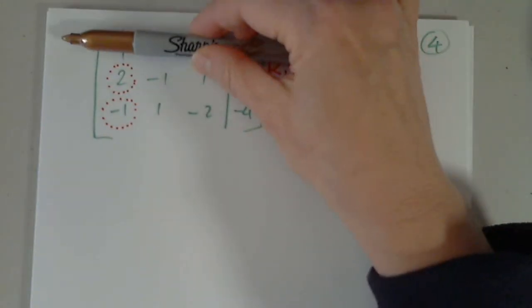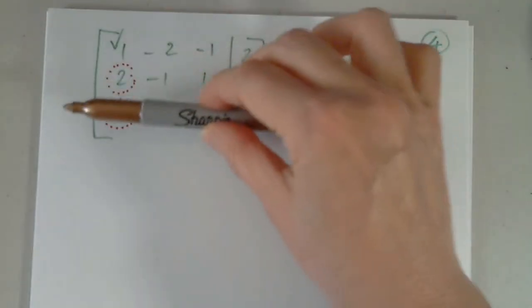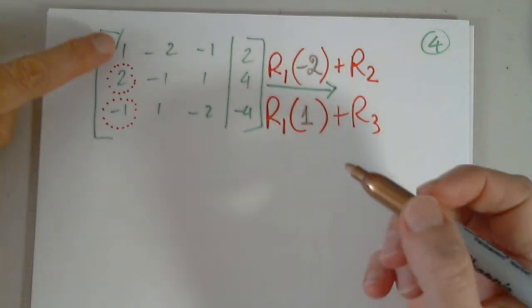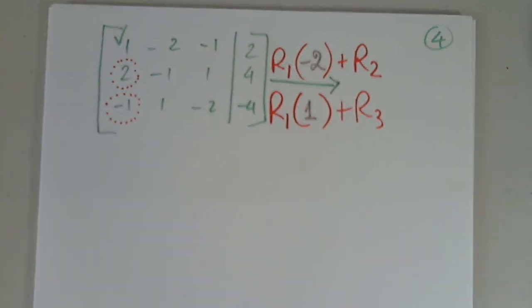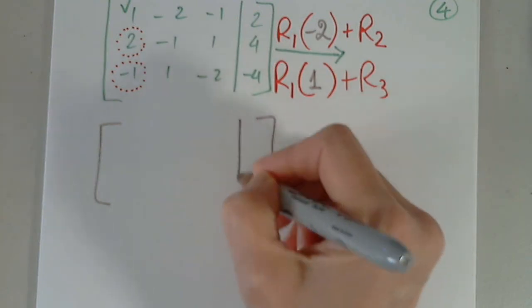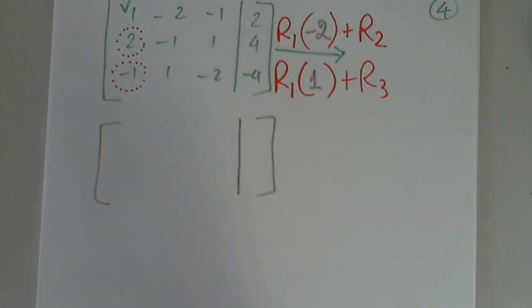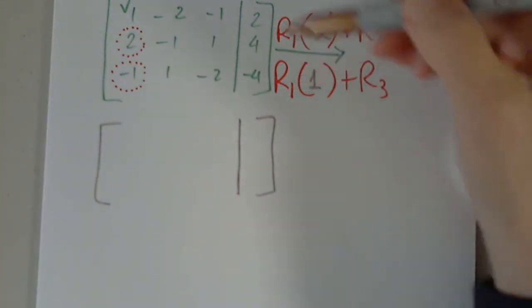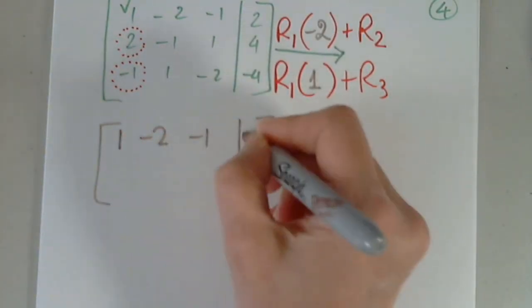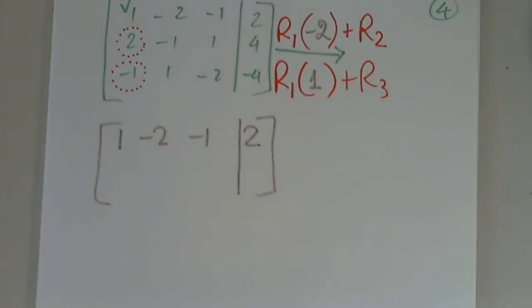What should I multiply this row by to eliminate this? By nothing — or if you want to write one, because when I add one to negative one, it will disappear. This is our first step. Because we are multiplying row one, this is the only row that does not change. I have to copy it. Now let's do this together. It looks different, but it's just the elimination part.